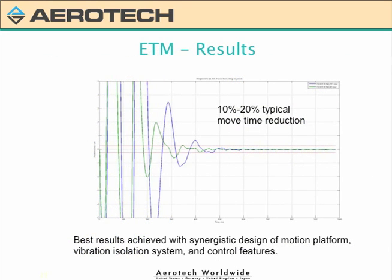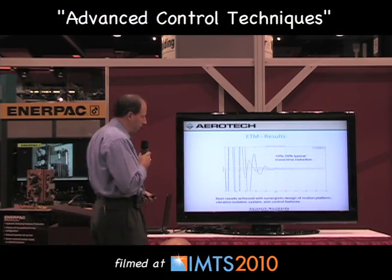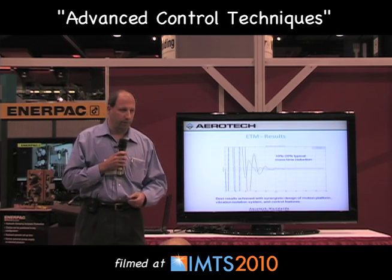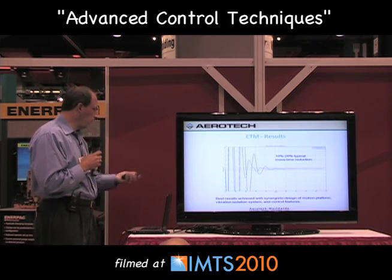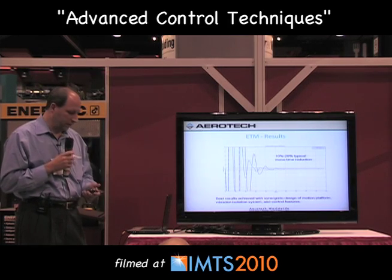Here's an example with a fairly stiff machine base. You can see in the green line the end of a move, looking at the transient die-down. The red lines represent where I would like to be in position before I could apply some process to the material. The green line shows the results with the ETM — I settle much quicker, probably about 14 to 15 percent quicker here. That translates into more productivity and machine throughput.